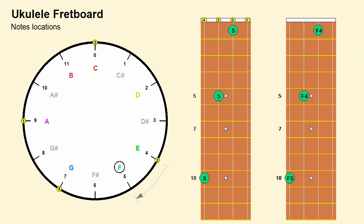Continuing with the second string: the note F is located 1 hour from the fourth hour, corresponding to the note E of the open second string — therefore it is located at the first fret of the second string. To conclude the search for all positions of the note F, considering the first string: the note F is located 8 hours from the ninth hour, corresponding to the note A of the open first string — therefore it is located on the eighth fret of the first string.